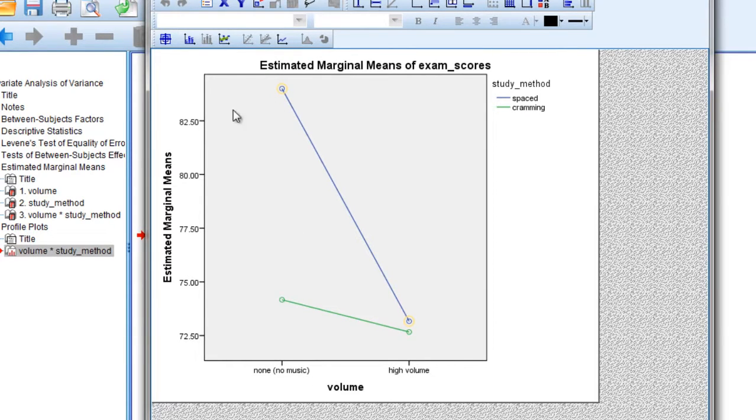So notice here, recall that high scores indicate better performance on the exam. And the y-axis here, or vertical axis, notice these numbers here, these are various exam scores. So this point way up here indicates by far the best performance on the exam. Whereas these three points, although slightly different, they're all quite similar in terms of exam performance.